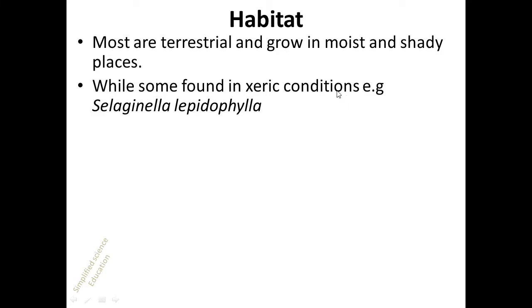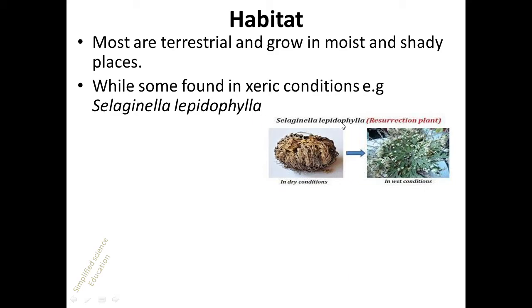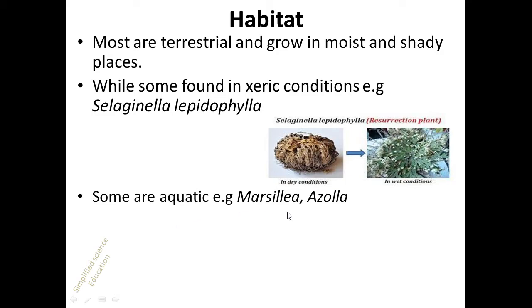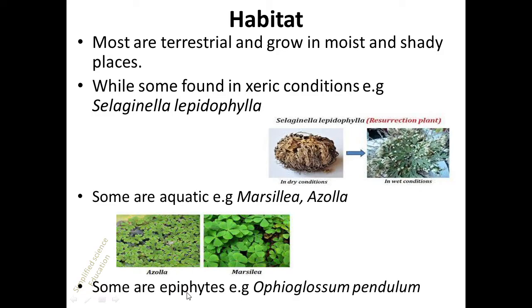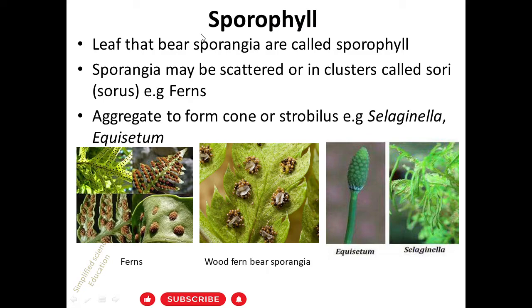Most pteridophytes are terrestrial and grow in moist and shady places. Some are found in xeric conditions, for example Selaginella lepidophylla, also known as the resurrection plant — a plant that can grow in both dry and wet conditions. Some are aquatic, for example Marsilea and Azolla. Some are also epiphytes; an example is Ophioglossum pendulum. Epiphytes grow on the stems of other plants.